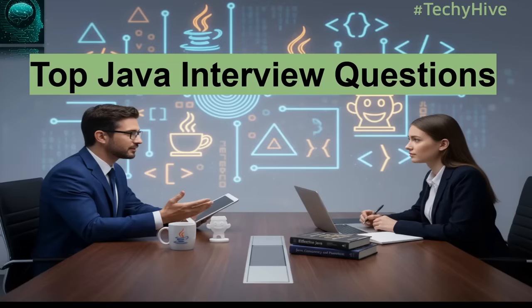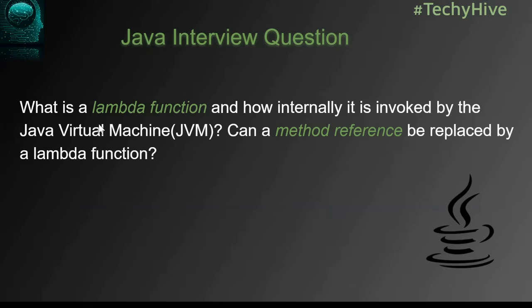Hello and welcome to TechieHive. In the previous video we talked about differences between synchronized block and synchronized method. Today we'll talk about another top Java interview question: What is a lambda function and how internally it is invoked by the Java Virtual Machine (JVM)? Can a method reference be replaced by a lambda function?